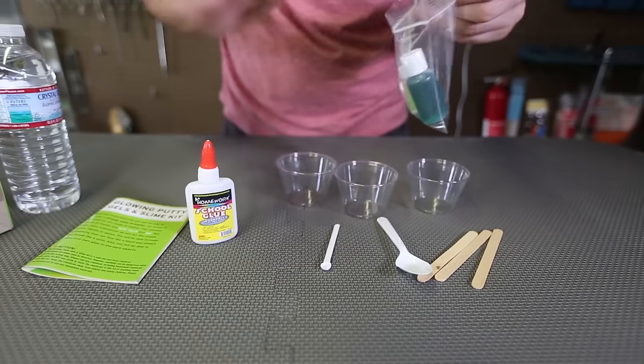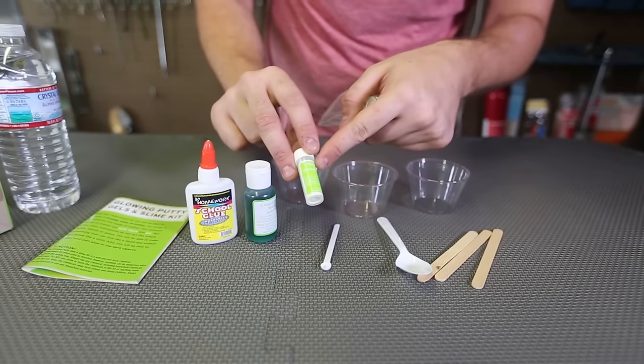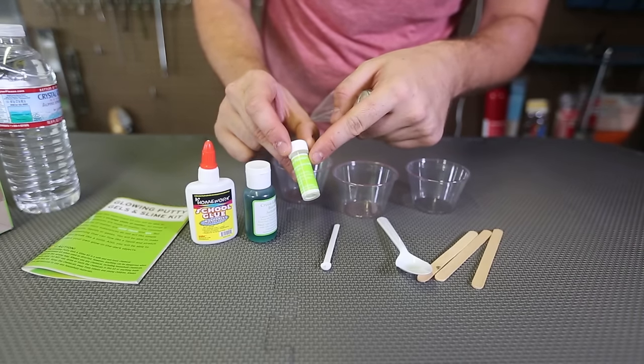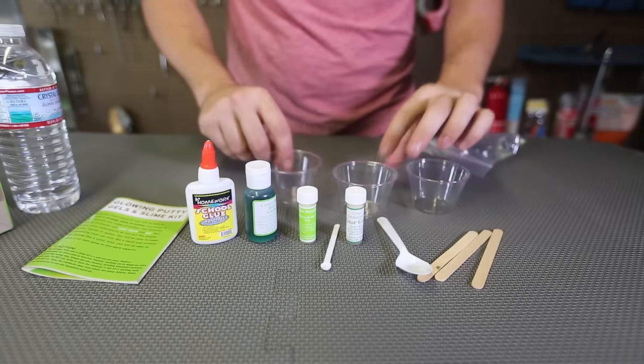School glue, regular glue. Here's a borax solution. Here we got glow powder, phosphorescent zinc sulfide and guar gum. Let's see what we're going to do.